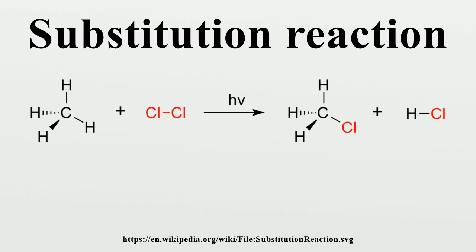The SN2 mechanism has just one step: the attack of the reagent and the expulsion of the leaving group happen simultaneously. This mechanism always results in inversion of configuration — if the substrate under nucleophilic attack is chiral, the reaction leads to an inversion of stereochemistry called a Walden inversion. SN2 attack occurs when the backside route of attack is not sterically hindered, typically at an unhindered primary carbon center. If there is steric crowding near the leaving group, such as at a tertiary carbon center, SN1 is favored instead.